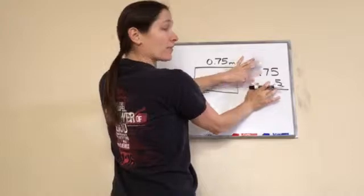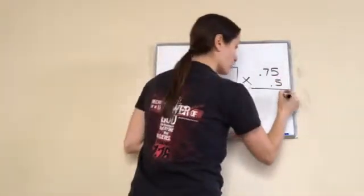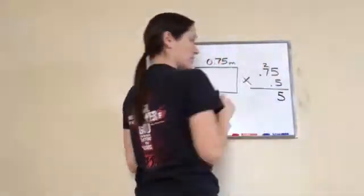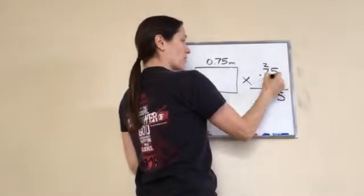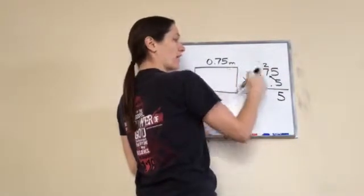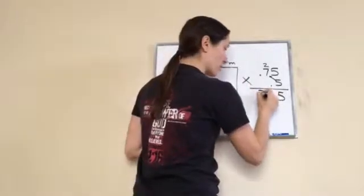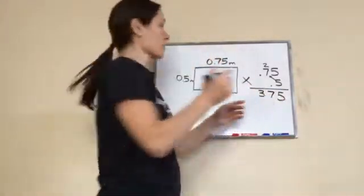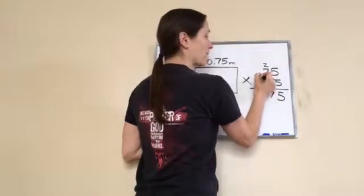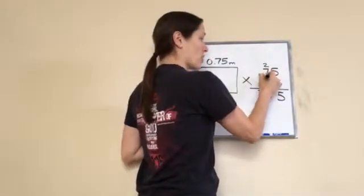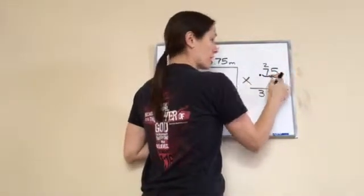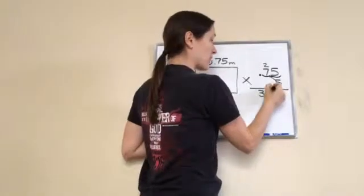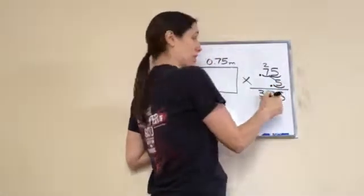Let's pretend like they're not there. We're gonna go five times five, twenty-five, carry the two. Then you go this way, five times seven is thirty-five plus two is thirty-seven. Now once we're done with our answer you're gonna count how many places are after the decimal—one, two—and then how many places are after this decimal, another one.